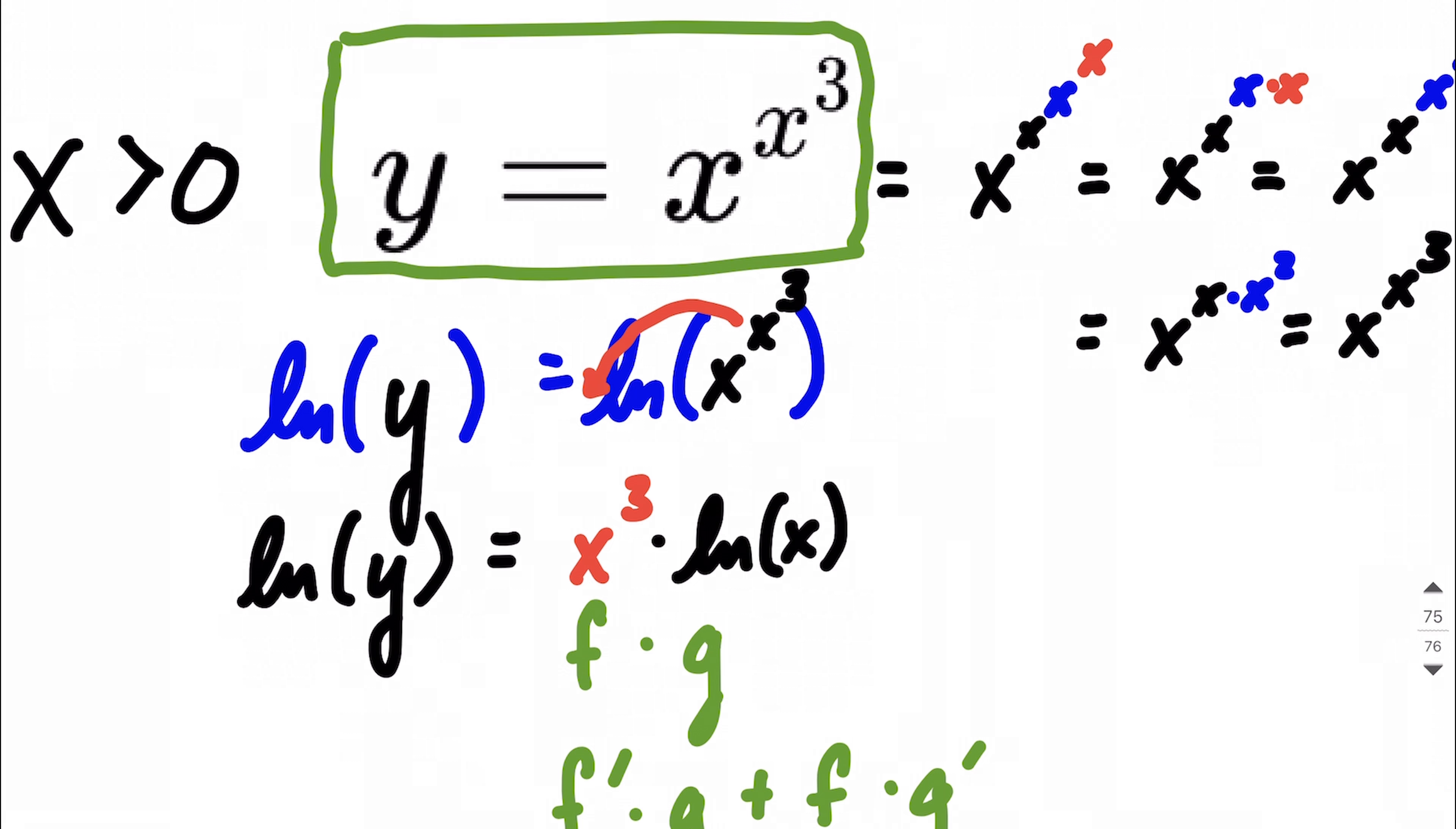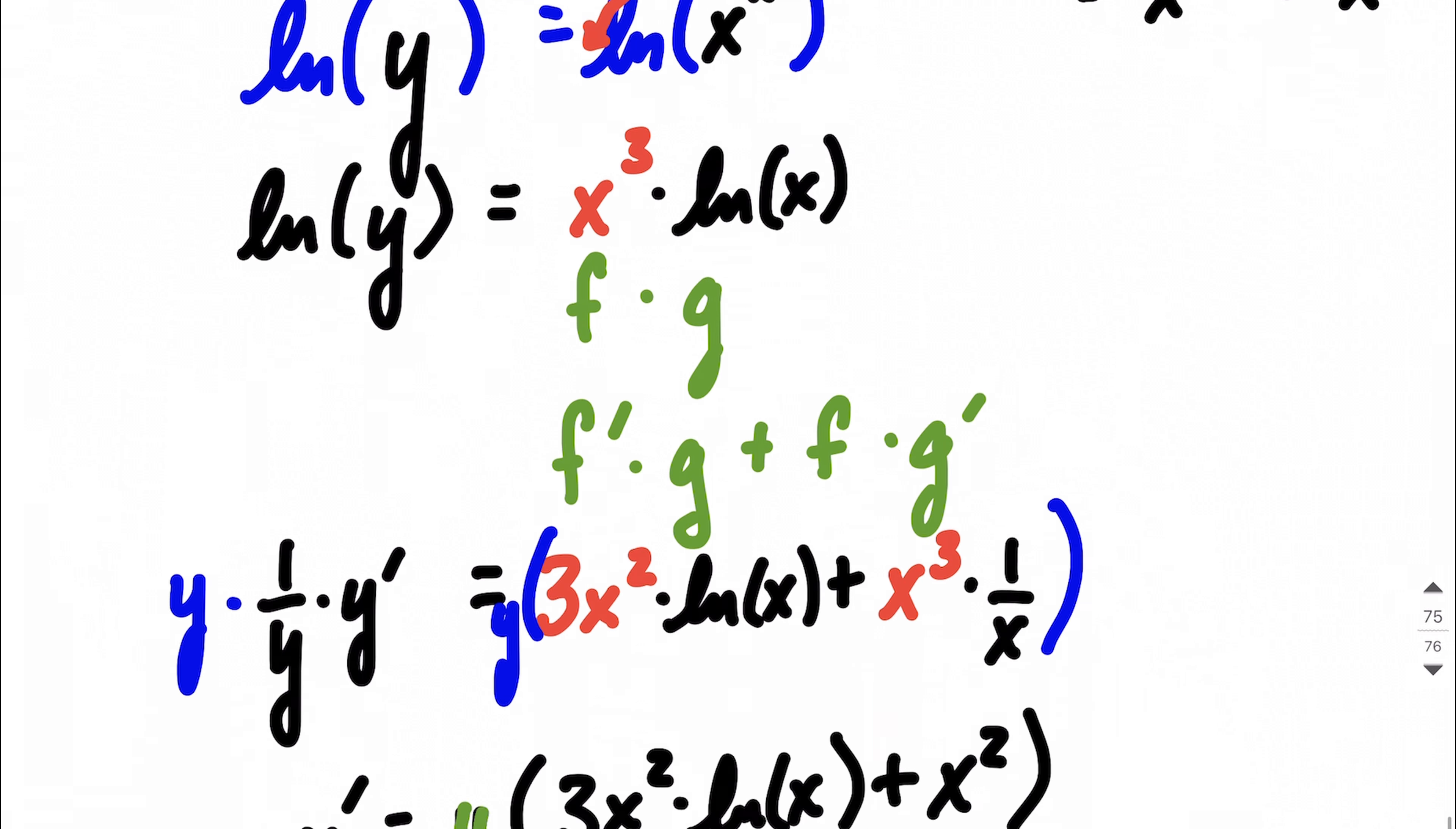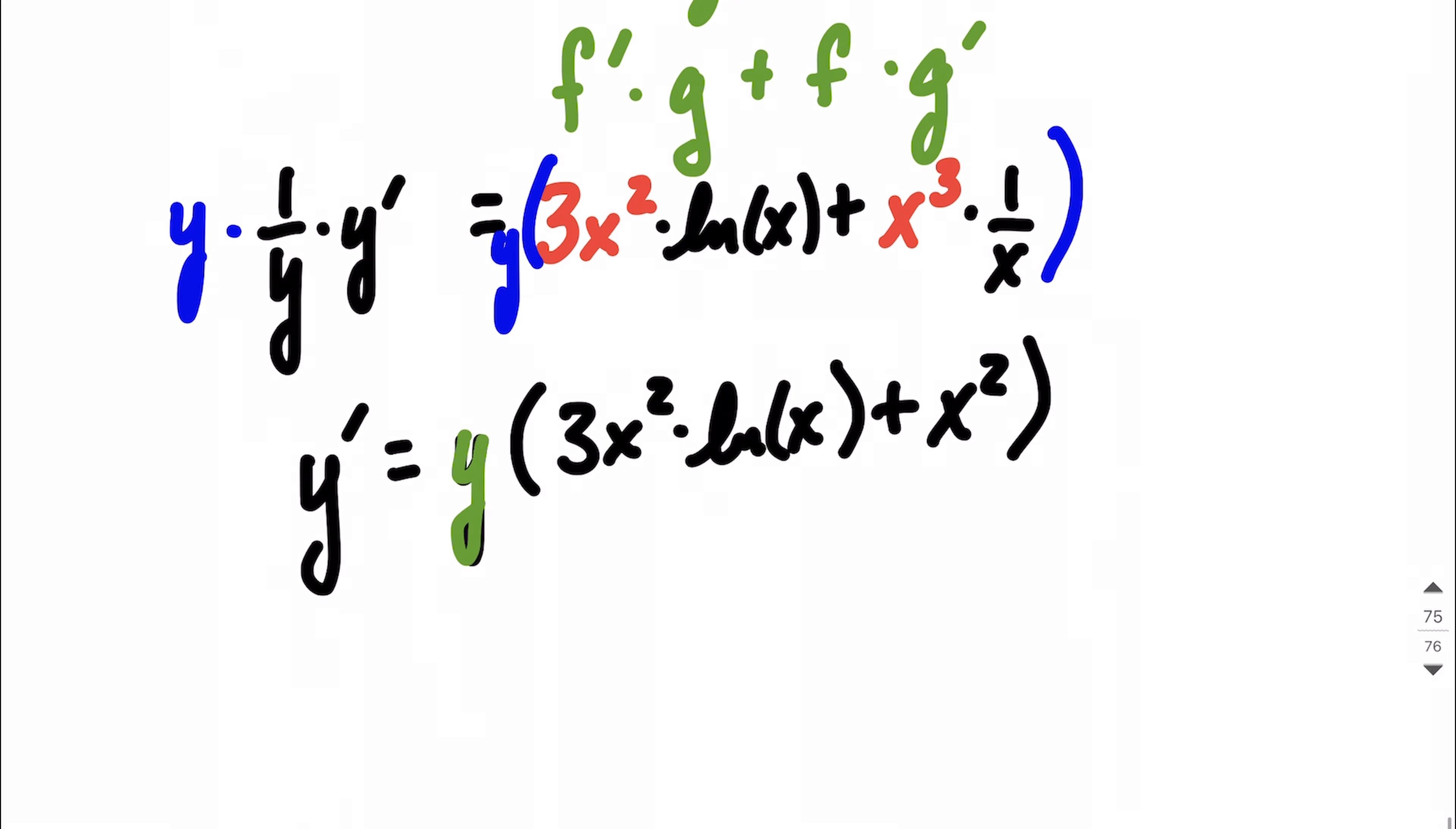and I'm going to replace y with x raised to the x to the third power. So where y was, we're going to put x raised to x to the third power out in front. And this way, it's all going to be in terms of y of x over on the right-hand side.